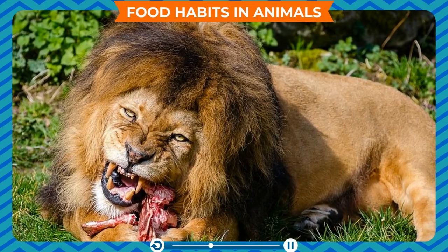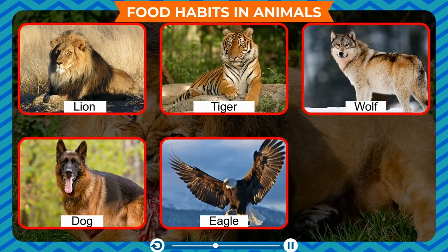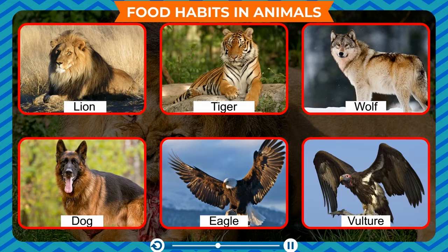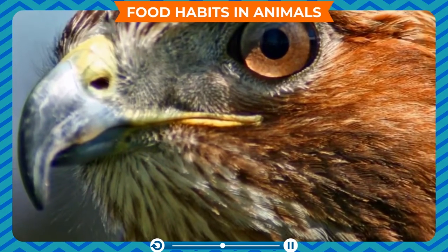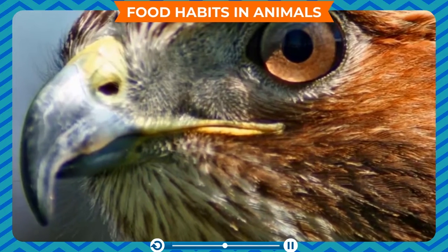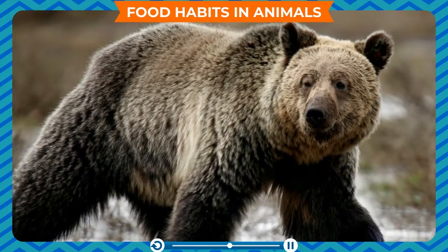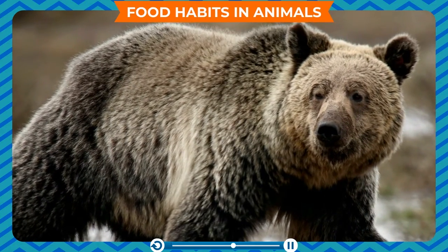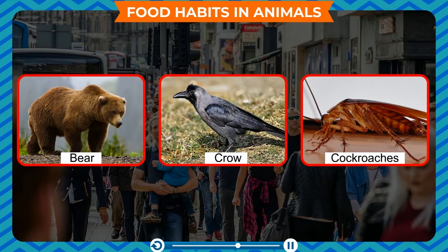Carnivores are animals that eat the flesh of other animals. Lion, tiger, wolf, dog, eagle, and vulture are carnivores. They have long and sharp teeth, and carnivorous birds have strong and pointed beaks to tear flesh. Omnivores are animals that eat both plants and animals. Humans are omnivores; bear, crow, and cockroaches also fall under the category of omnivores.